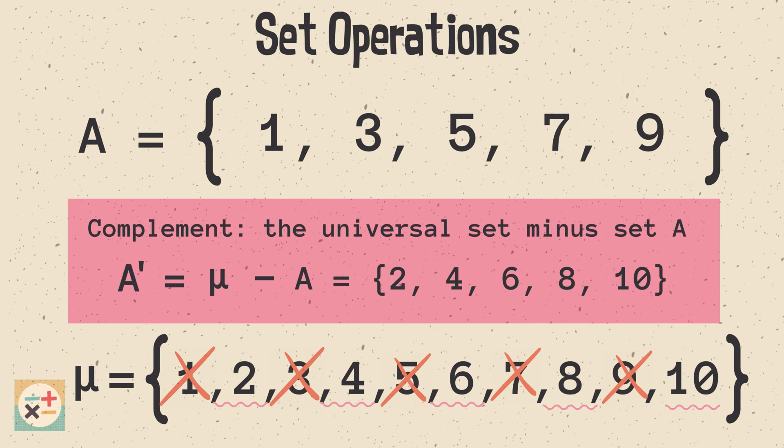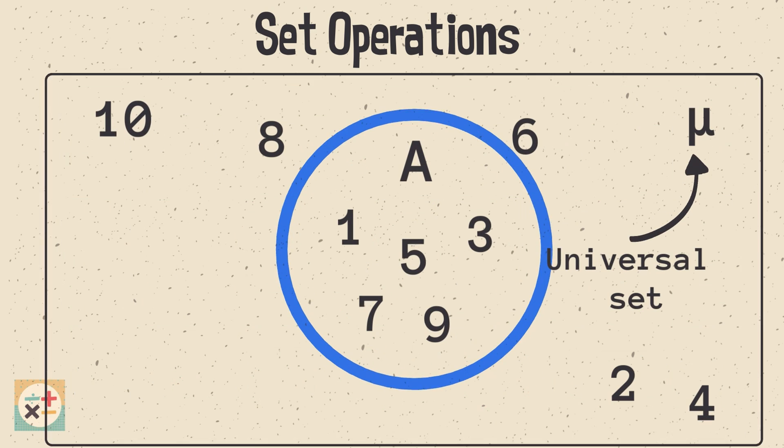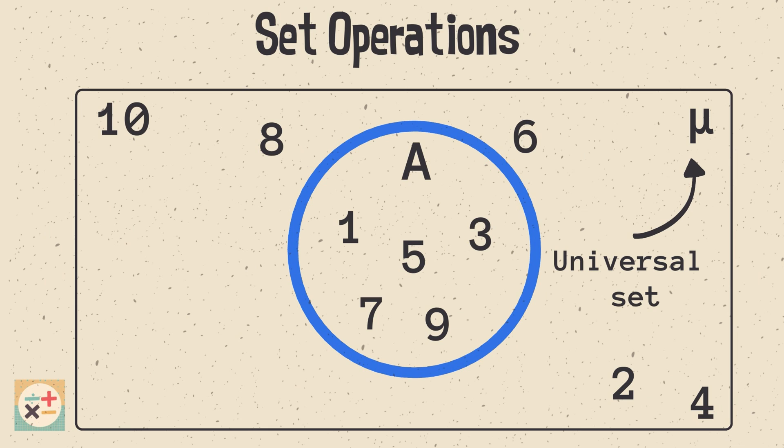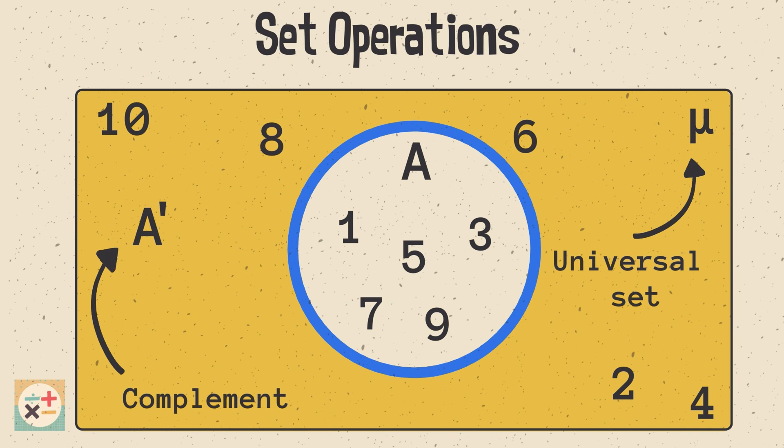Have a look at this Venn diagram to demonstrate. We have the universal set of numbers from 1 to 10. Inside the circle, we have all the elements in set A. So anything outside the circle but within the universal set is classed as the complement of A.